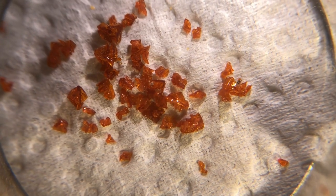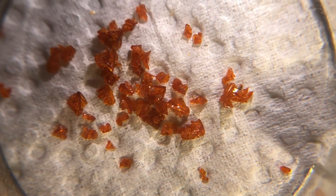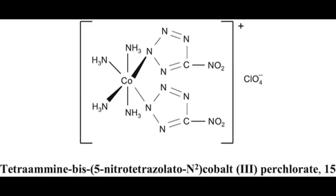BNCP is entirely different from any other energetic compounds I've worked with up until now. Rather than being composed of covalent and ionic bonds, the core of the molecule is a coordination complex known as Cysbis-5-Nitrotetrazole-Tetraamine-Cobalt-3. This is composed of the central cobalt-3 metal cation, four amine ligands, and two nitrotetrazole ligands contributing to a 1-plus charge.